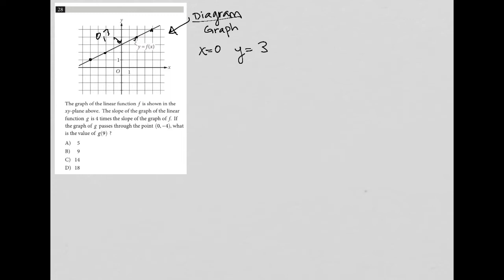What is the slope of this graph that we have? If I were to go, for instance, from this point to this one, I would rise 1 and run 2. So the slope of f is equal to 1/2.